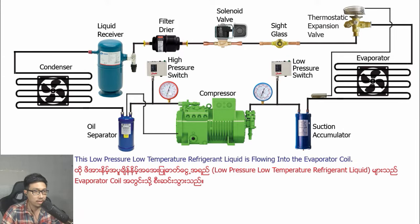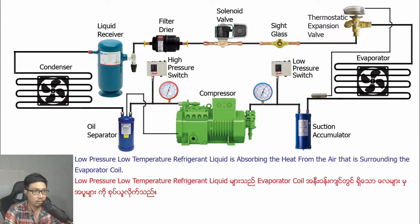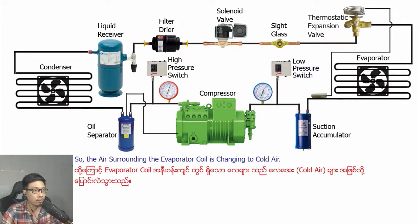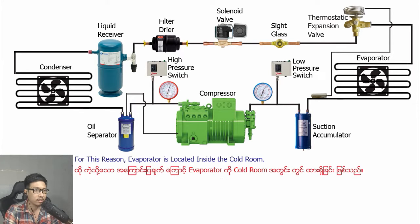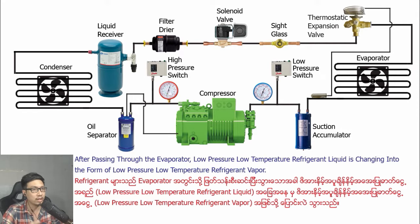This low pressure, low temperature refrigerant liquid flows into the evaporator coil. The low pressure, low temperature refrigerant liquid absorbs the heat from the air surrounding the evaporator coil, so the air surrounding the evaporator coil changes to cold air. For chilling or freezing food and chemical products, this cold air is flowed into the cold room by the evaporator fan. For this reason, the evaporator is located inside the cold room.